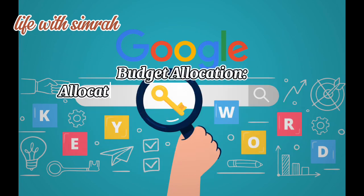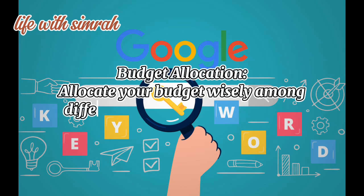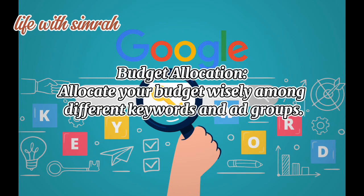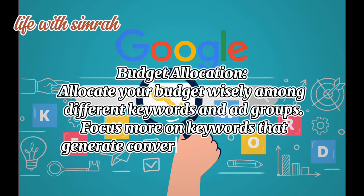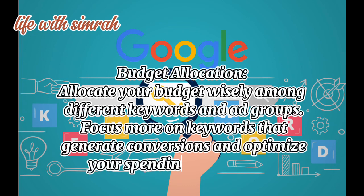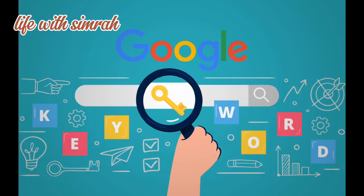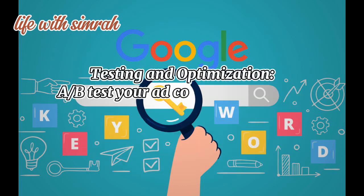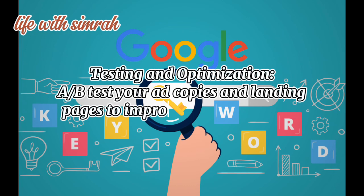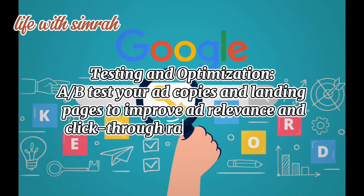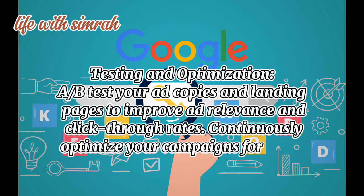Budget allocation — allocate your budget wisely among different keywords and ad groups. Focus more on keywords that generate conversions and optimize your spending accordingly. For testing and optimization, A/B test your ad copies and landing pages to improve ad relevance and click-through rates. Continuously optimize your campaigns for better results.